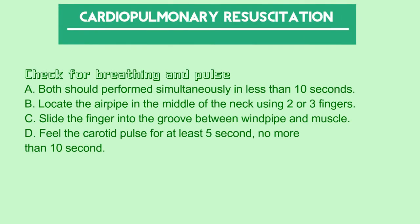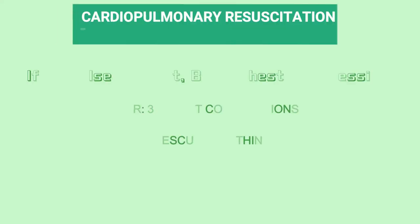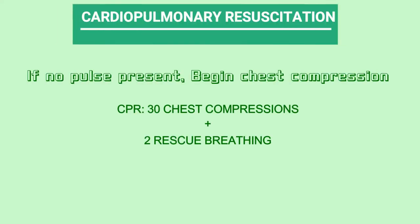Check breathing and pulse simultaneously in less than 10 seconds. First, locate the air pipe in the middle of the neck using two or three fingers. Slide the fingers into the groove between the windpipe and muscle. Then feel the carotid pulse for at least 5 seconds, but do not exceed 10 seconds. If there is no pulse, begin chest compression.